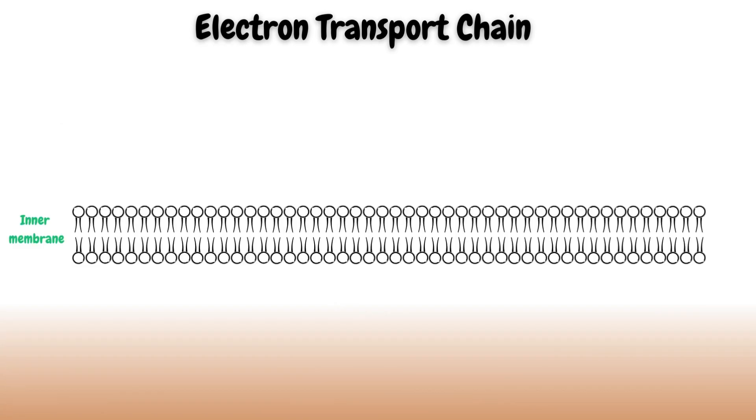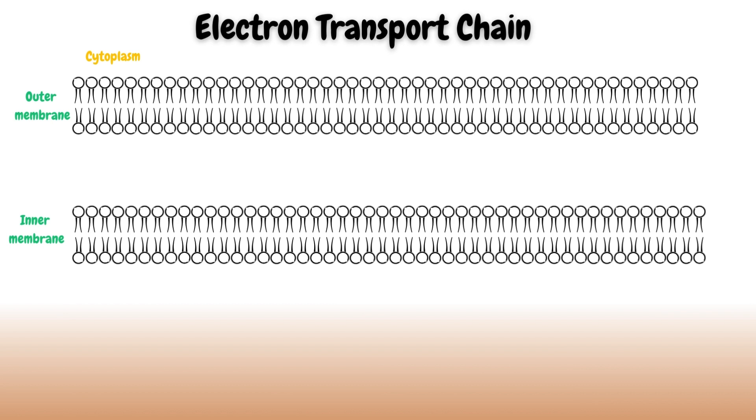Let's zoom into the inner membrane of mitochondria where electron transport chain occurs. This is the outer membrane of mitochondria. The space between these membranes is called intermembrane space, and the inside of mitochondria is the mitochondrial matrix.